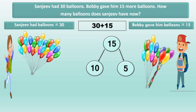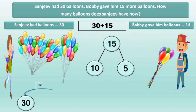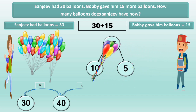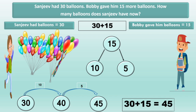Sanjeev had 30 balloons. When Bobby gave 10 more balloons, Sanjeev had 40 balloons. When Bobby gave 5 more balloons, Sanjeev had 45 balloons. So, Sanjeev has 45 balloons now.